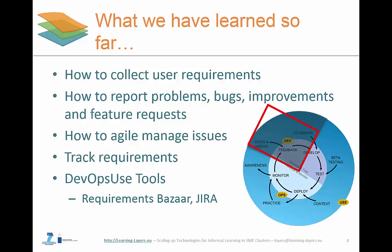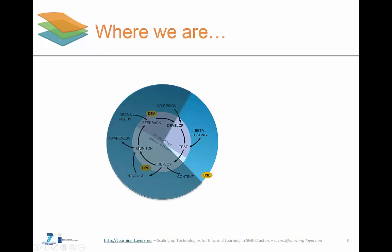In previous webinars, we traversed the idea and needs and co-designed several parts of the DevOps use lifecycle. We have seen how users can collect requirements and how improvements, features and issues can be reported with tools like Requirements Bazaar and Jira. This webinar is dedicated to the specific agile development tools used in Learning Layers that ensure a smooth collaborative software development process and integration, automation and testing of our software products. We address the develop and test phases, as highlighted in the DevOps use cycle.